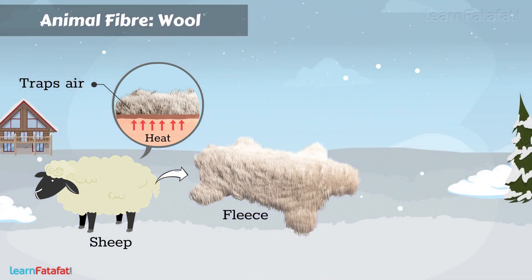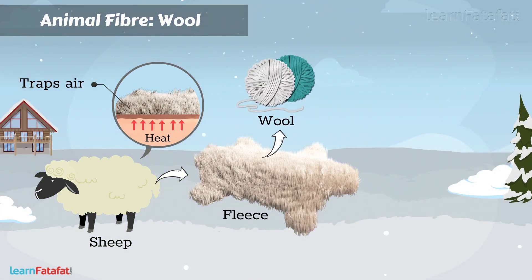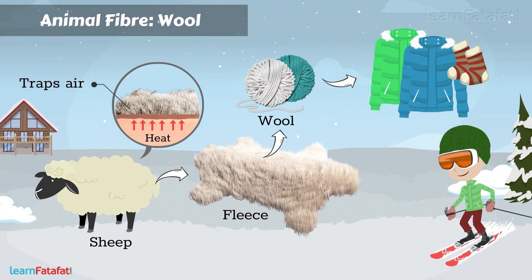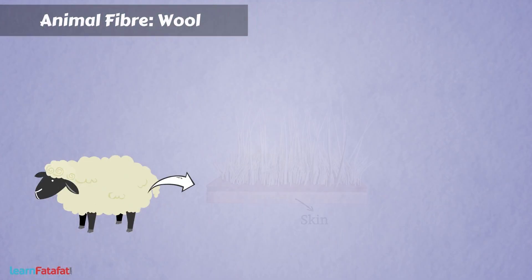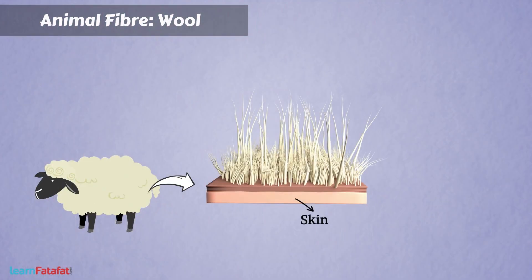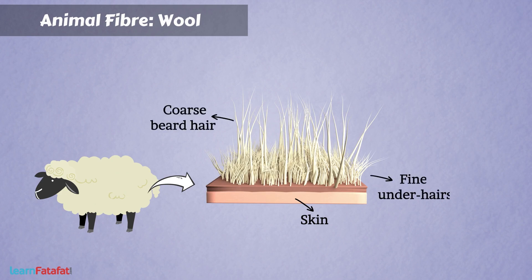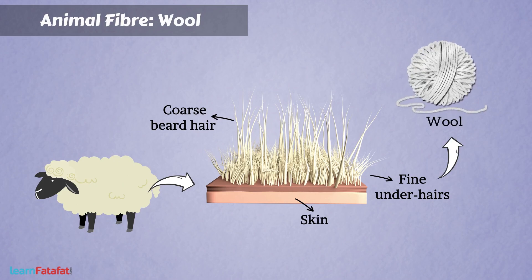We obtain wool from the fleece of sheep. The clothes made of wool keep us warm. Basically, the skin of sheep has two types of hairs: coarse beard hair, and fine soft under hair located close to the skin. Wool is obtained from the fine under hairs of sheep.